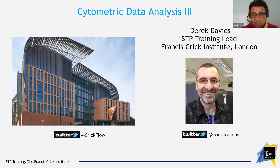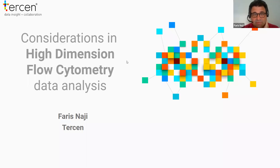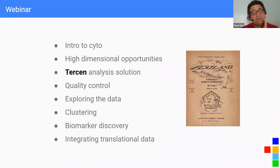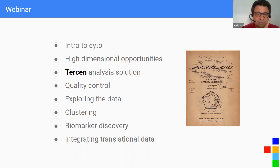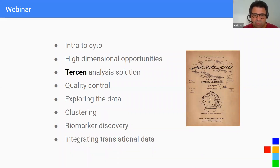Thanks Derek. I appreciate everybody spending an hour with me about high-dimensional flow cytometry. I'll start with my slides. I'm Ferris Najee, co-founder of Tersen, all about high-dimensional data. We're a pan-European online company without fixed offices. I'd like to do a quick intro to Tersen, talk about high-dimensional opportunities and challenges, and give advice on quality control, exploring your data, clustering, biomarker discovery, and integrating with translational data.